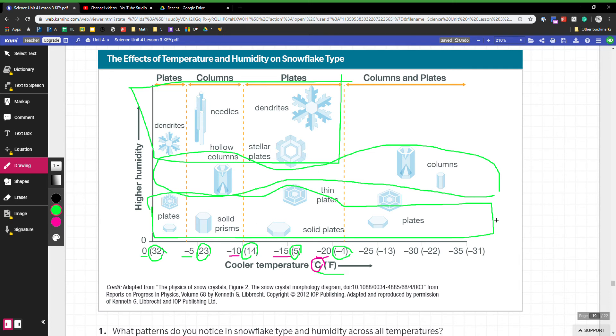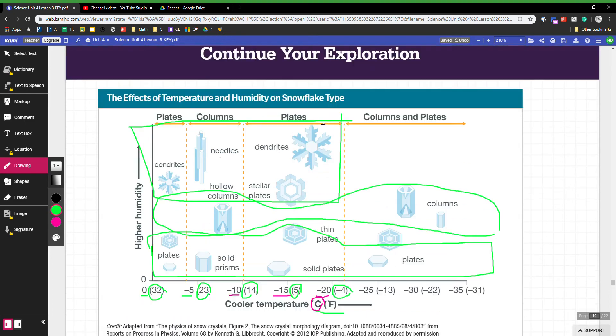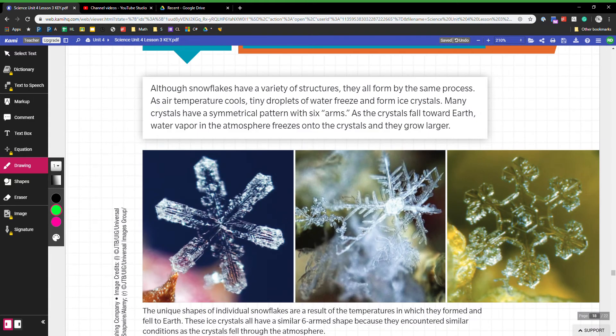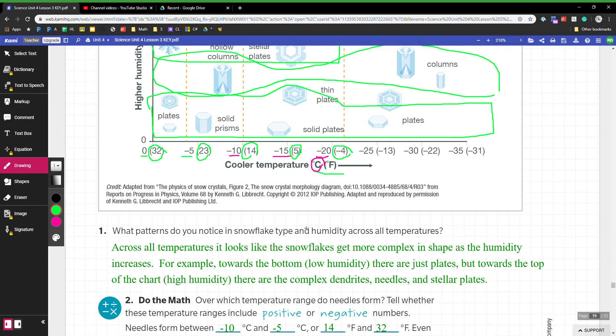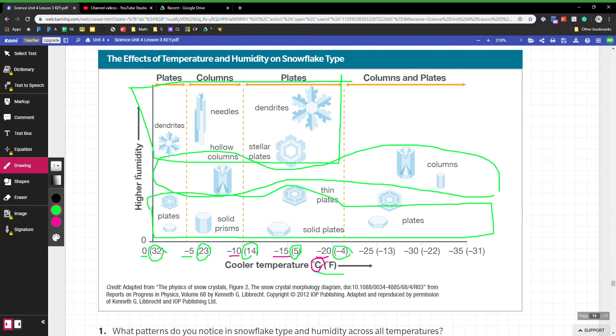No matter what the temperature is, if you go from up to down, up at the top you have these complicated shapes like dendrites and stellar plates, like the ones you see in these pictures up here. Then down lower where there's low humidity they are making these more basic plates. So it seems like humidity is the thing that more affects how they form.